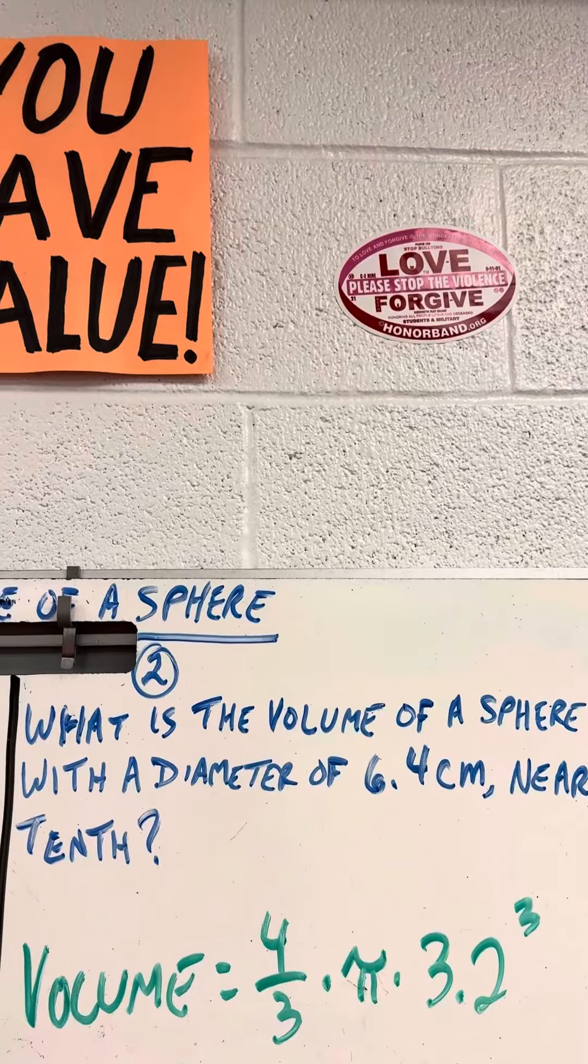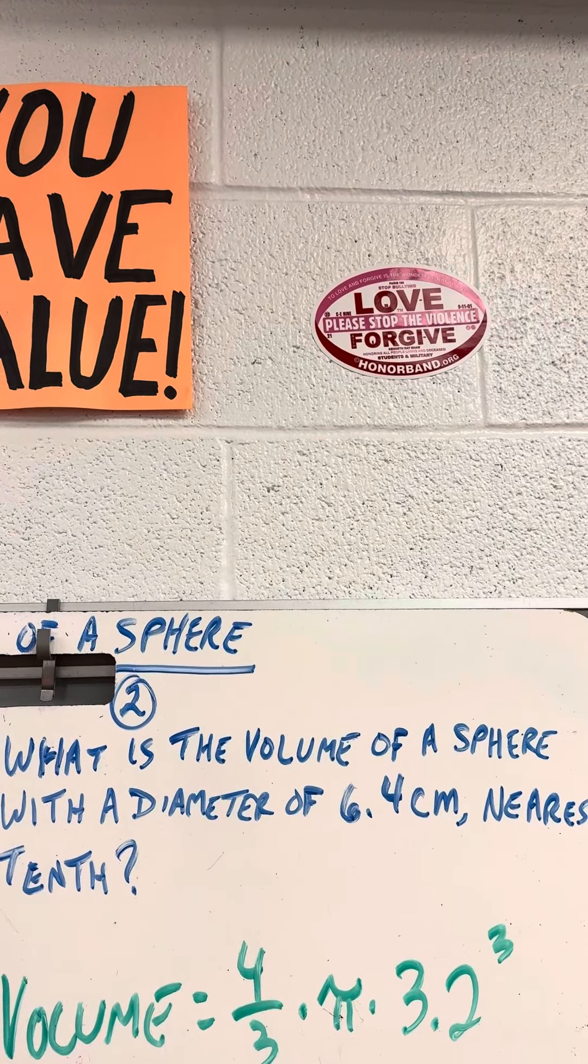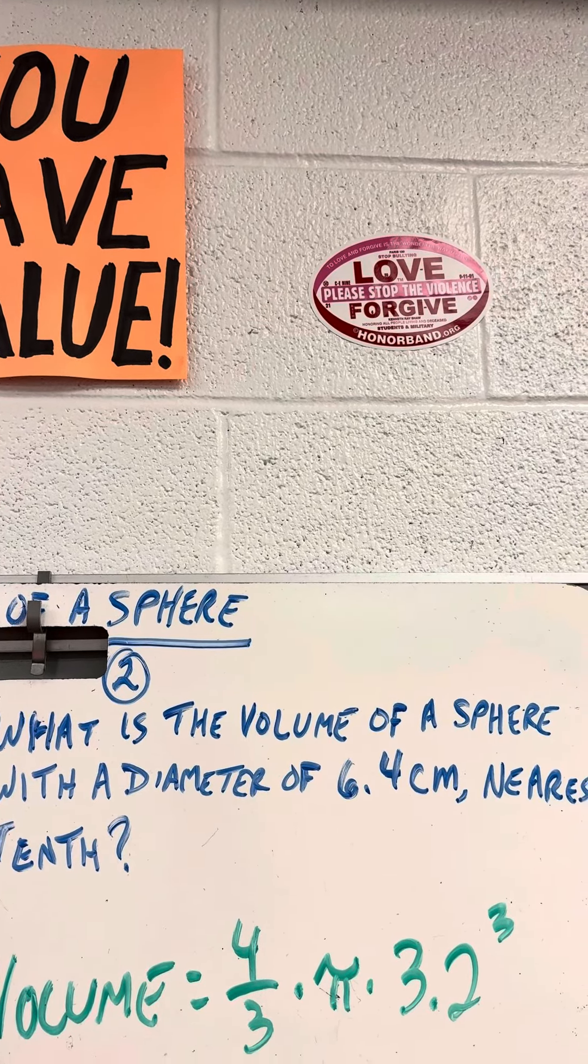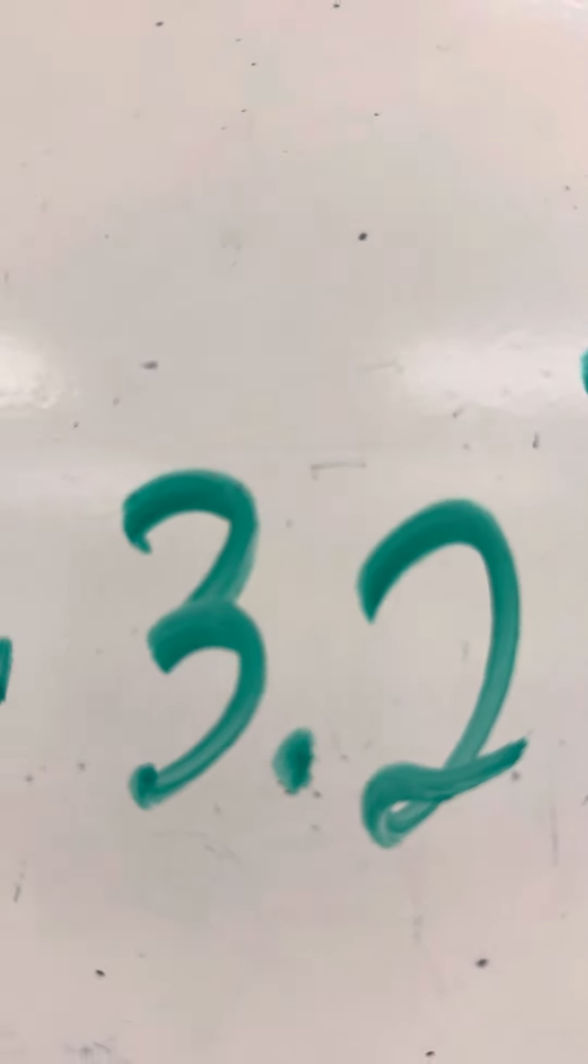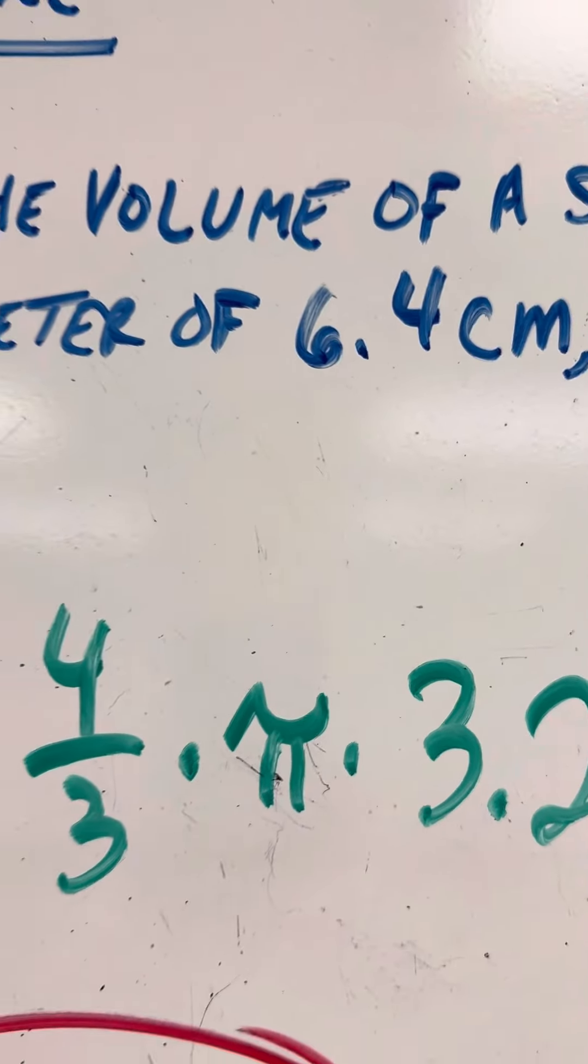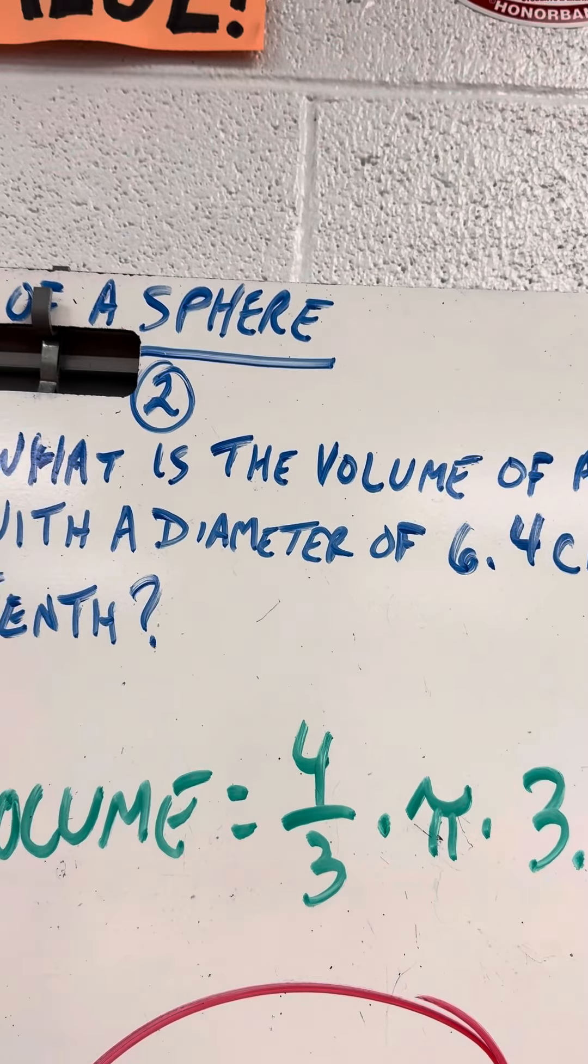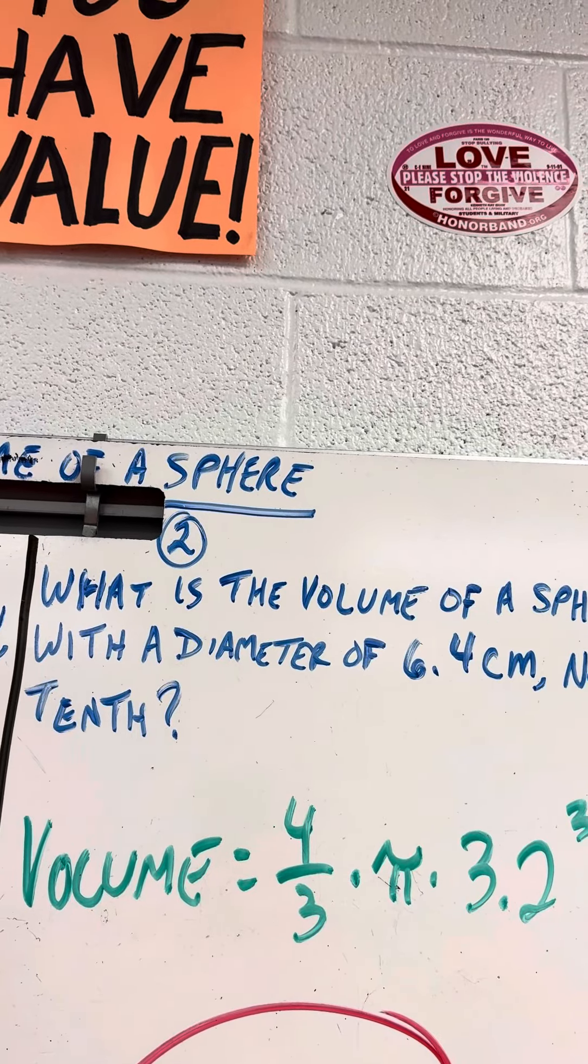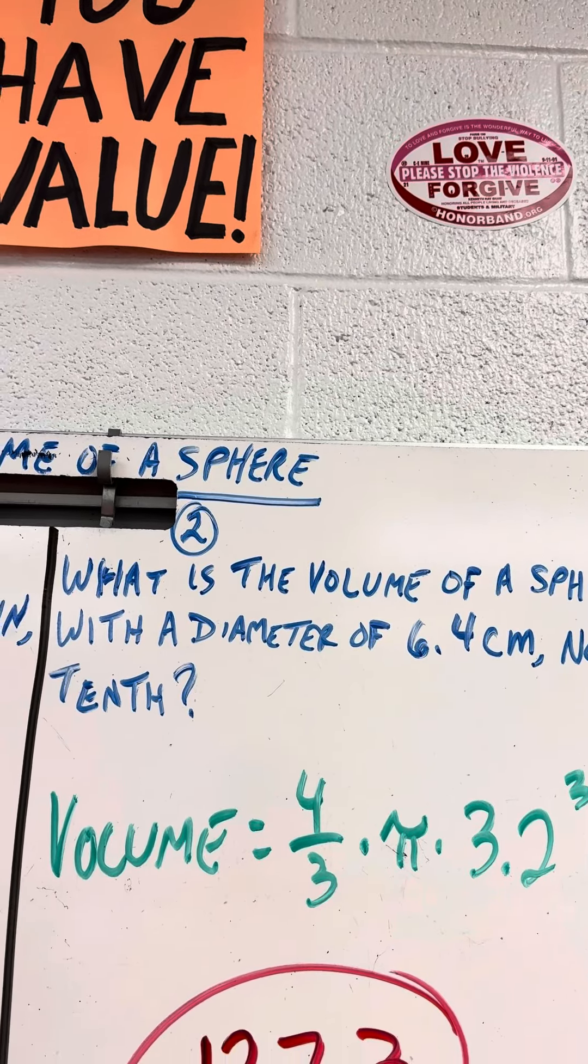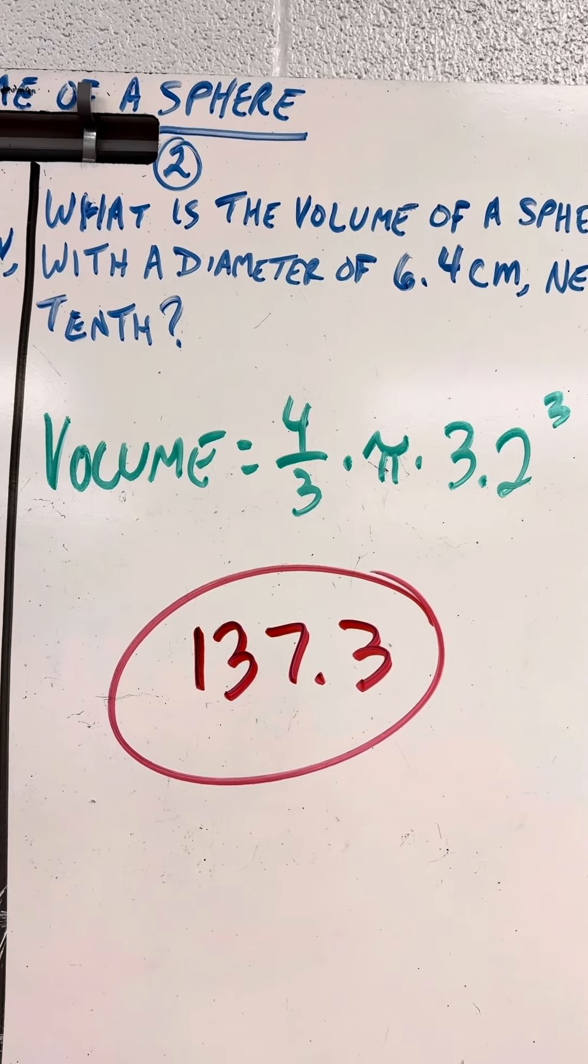What's the volume of a sphere with a diameter of 6.4? If the diameter is 6.4, the radius is 3.2, half of 6.4. So you do 4 divided by 3 times pi times 3.2. Hit the x to the third key and equals. You get 137.3.